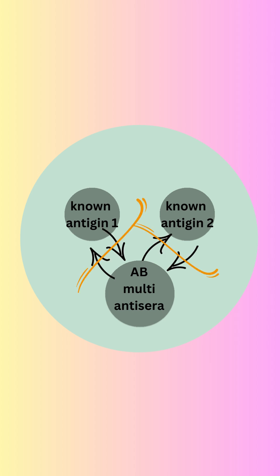Next, antigens and antibodies diffuse through the agar gel from their respective wells. If there is an interaction between an antigen and an antibody, a visible line of precipitation — a precipitin line — forms in the gel where the two molecules meet.